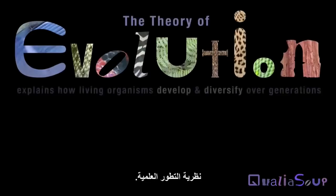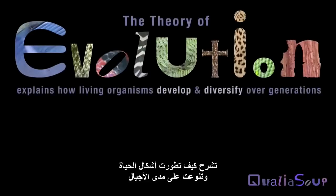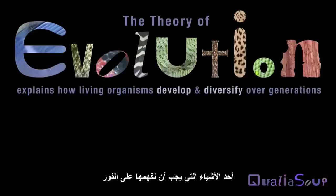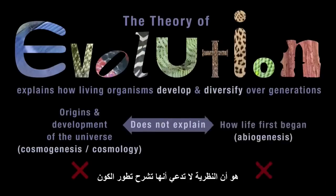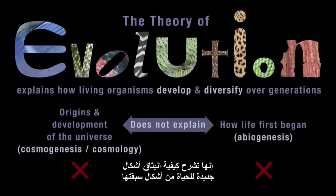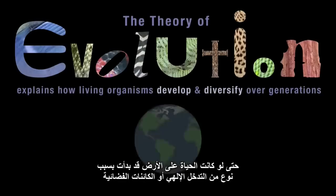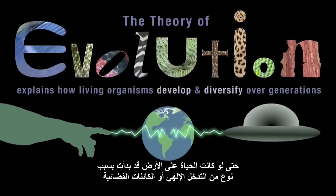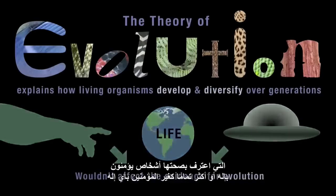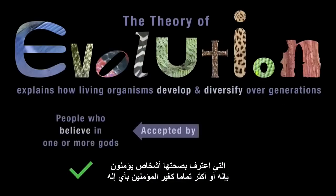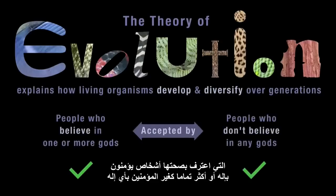The Scientific Theory of Evolution explains how lifeforms develop and diversify over generations. It doesn't claim to explain the development of the universe or how life was first begun. It explains how new varieties of lifeform emerge from earlier lifeforms. Even if life on Earth had been initiated by some kind of divine or alien intervention, that wouldn't affect the evidence for evolution, which is accepted by people who believe in one or more gods as well as those who don't.